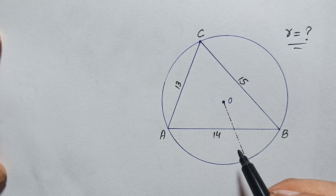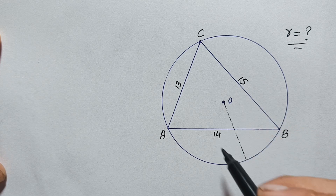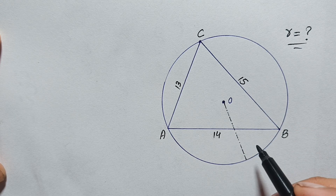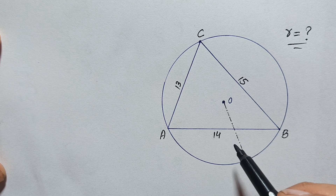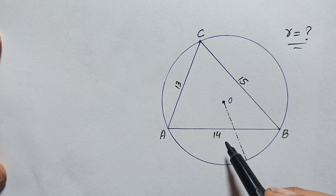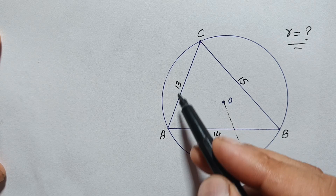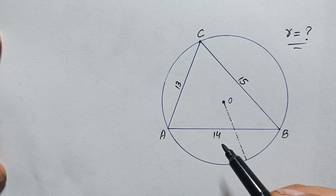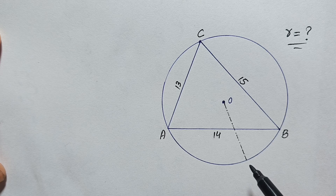Hello everyone, welcome. We have a very interesting geometry math problem. We are given a circle with a triangle inside — triangle ABC — having three sides: the base AB is 14 units, BC is 15 units, and AC is 13 units. We have to find the radius of this circle.